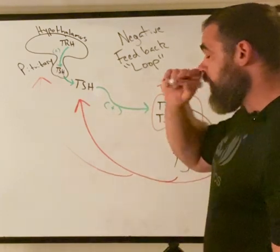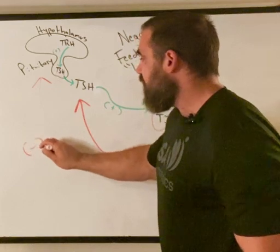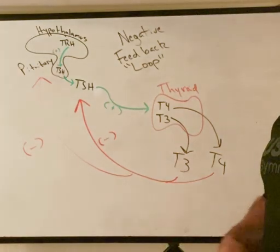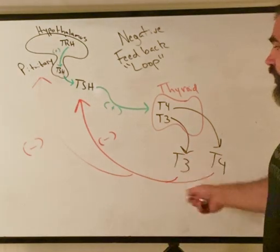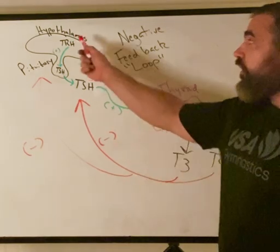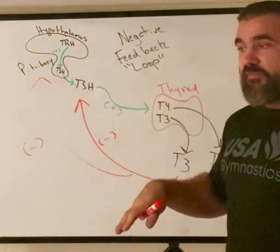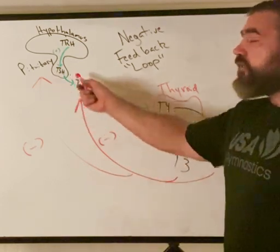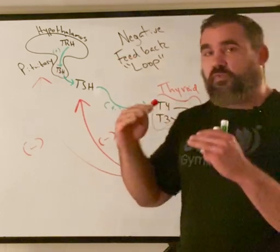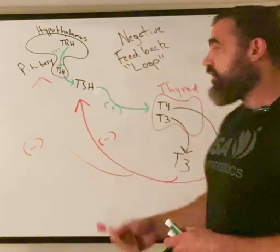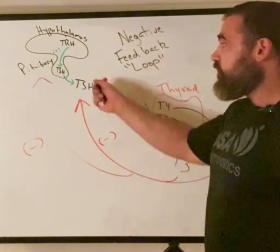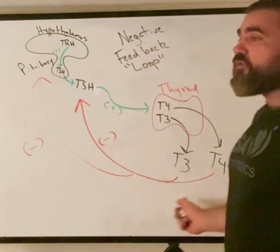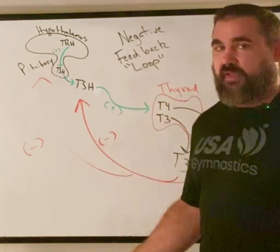T4 and T3 are going to negatively feed back — we put a big negative. As T4 and T3 go up, their presence alone causes TRH and TSH to go down. There's more and more negative feedback, so TSH goes down. This is how thyroid hormones fluctuate to maintain homeostasis — as T4 and T3 go up, there's more negative feedback and we crank TSH down a little bit.